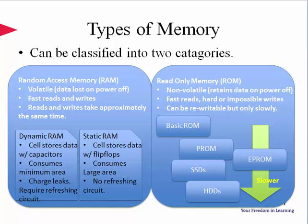Memory ICs can be classified into two major categories: random access memory and read-only memory. Random access memories are volatile memories. In other words, data shall be lost when the device is powered off. Reads and writes are fast, and both read and write operations can take approximately the same time.